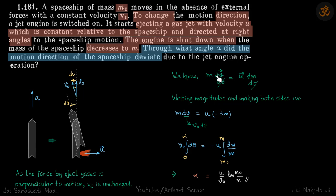So now we can introduce θ. We'll just write that m times v₀ dθ is equal to u times minus dm.